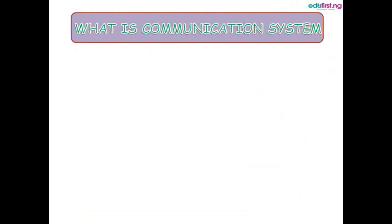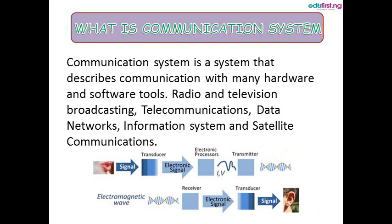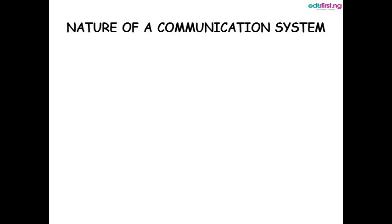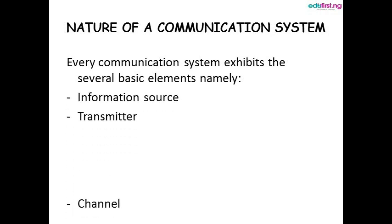What is a communication system? A communication system is a system that describes communication with many hardware and software tools. Radio and television broadcasting, telecommunication, data networks, information systems, and satellite communications are all examples. Every communication system has several basic elements: information source, transmitter, channel, signal, receiver, and destination.